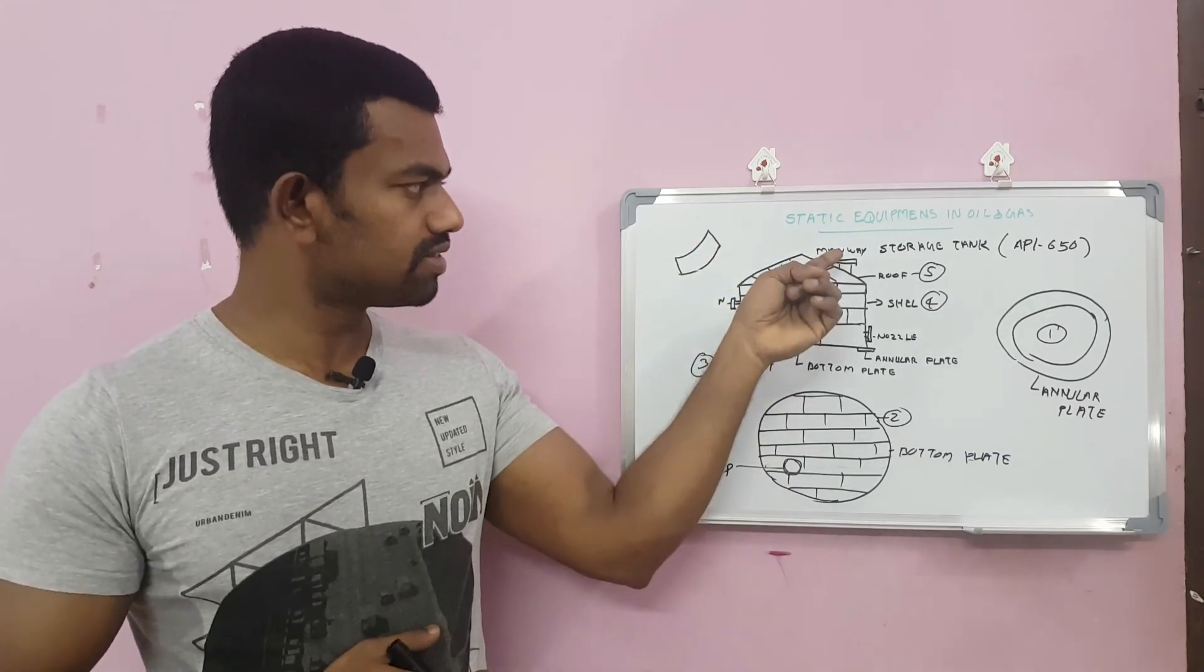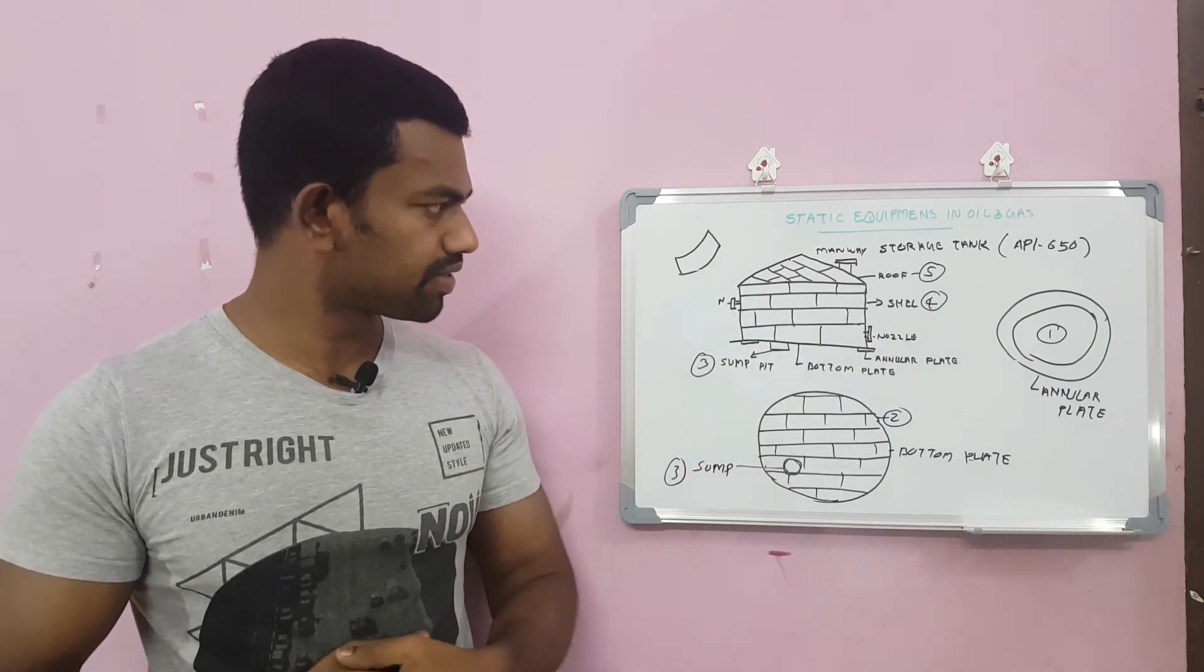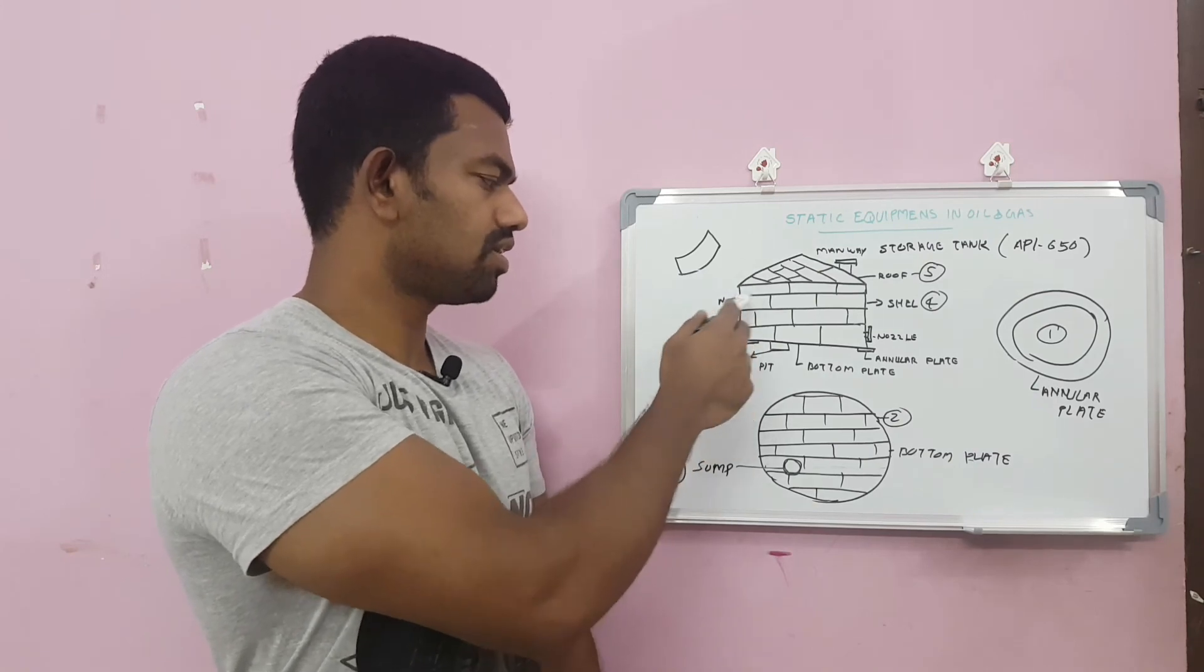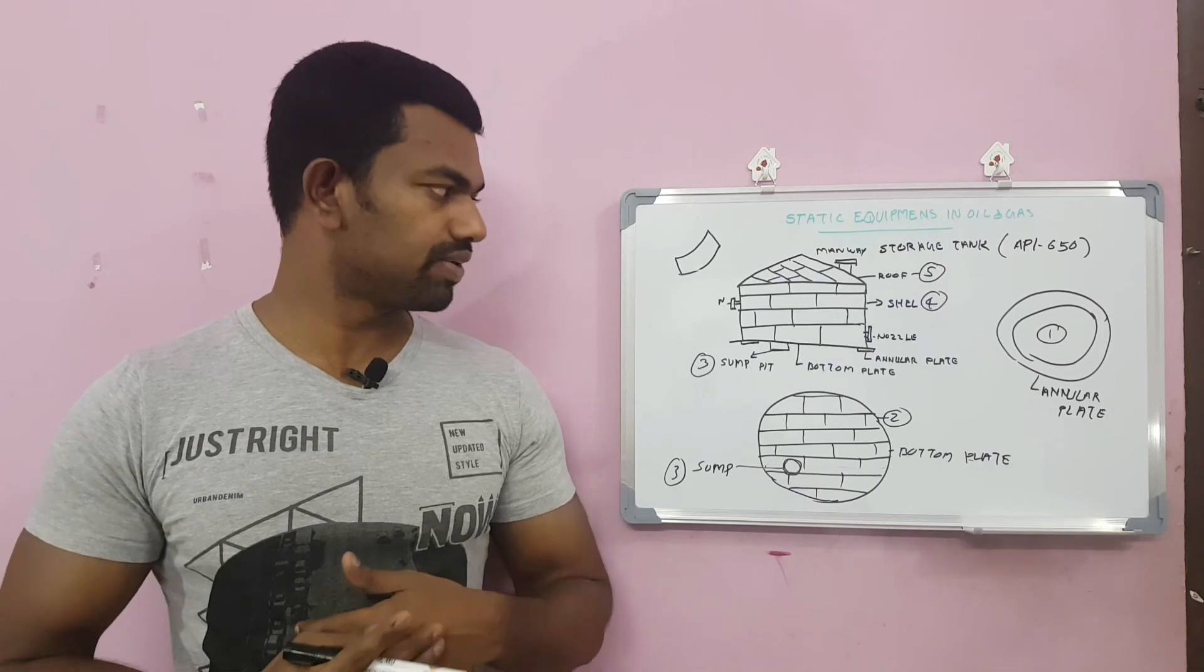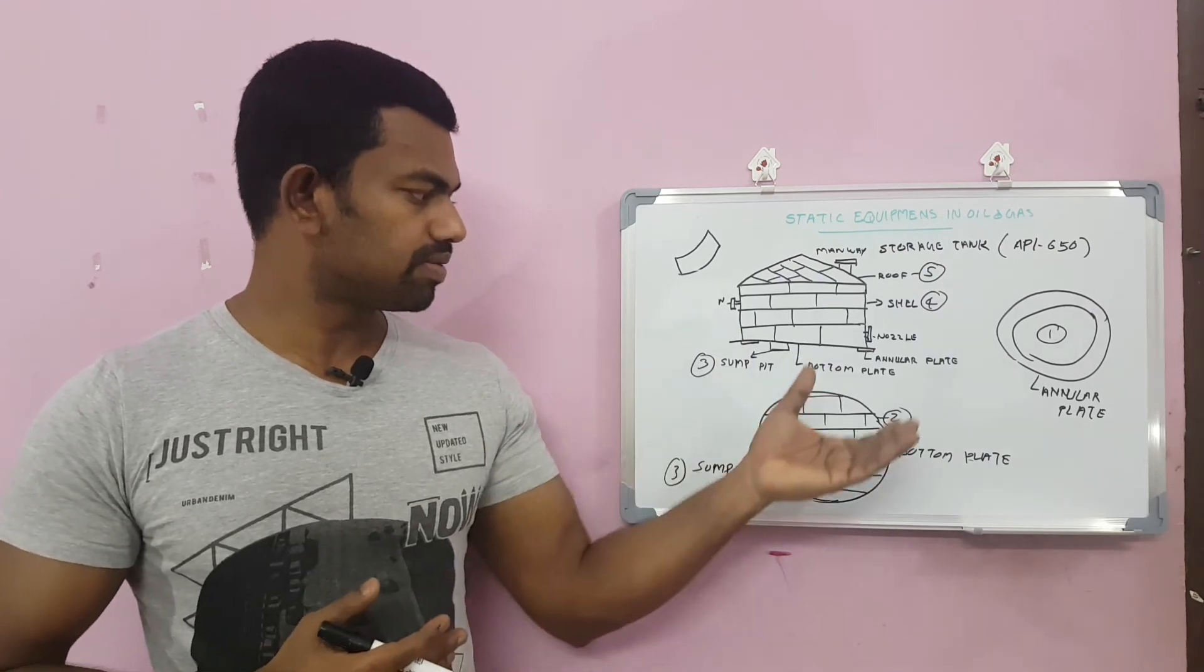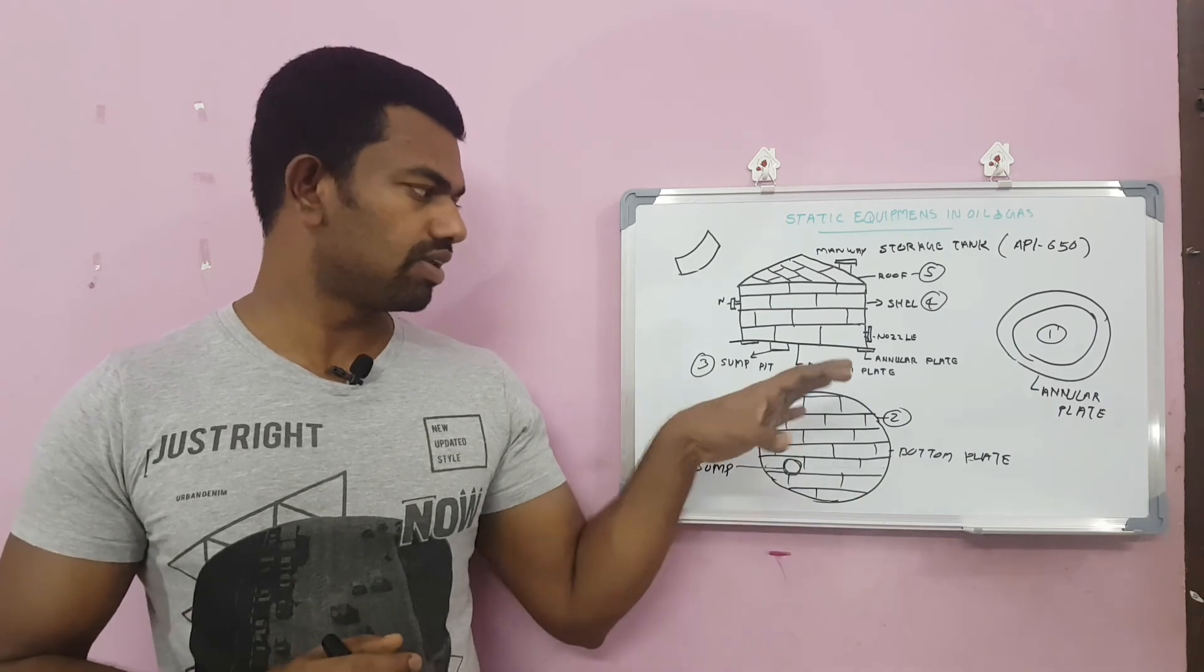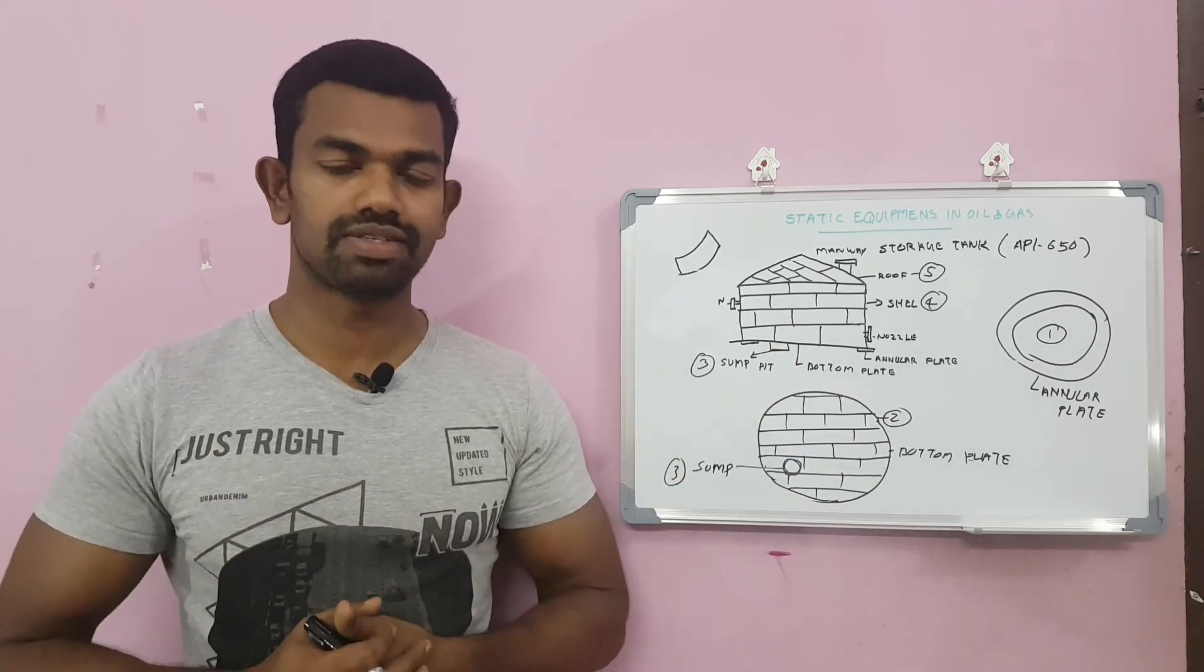These are the manway, the nozzles. Also have some level gauge or level indicator, level transmitter for identification of the level of the liquid. These are the major components of the storage tank. This is only roughly. There are more details I am not able to explain in short videos.